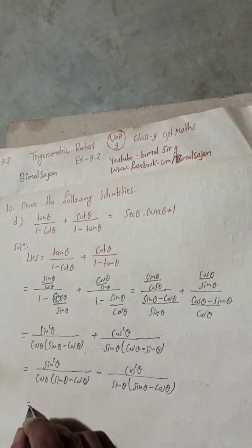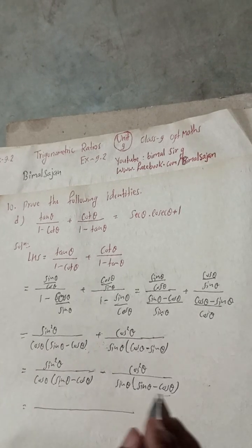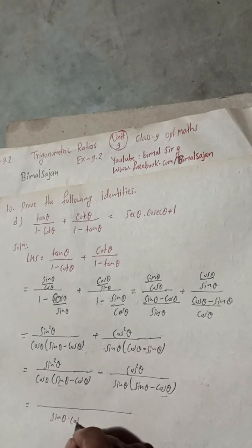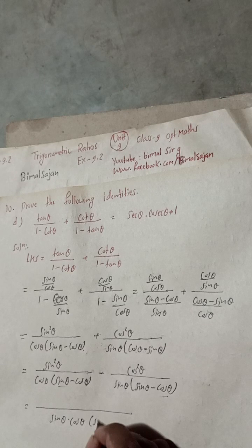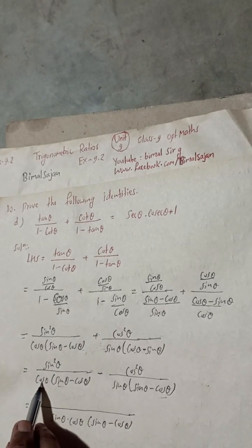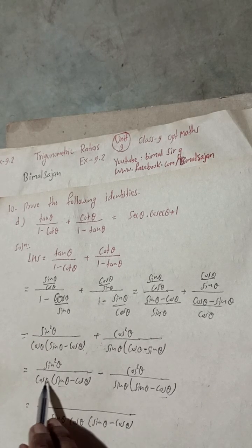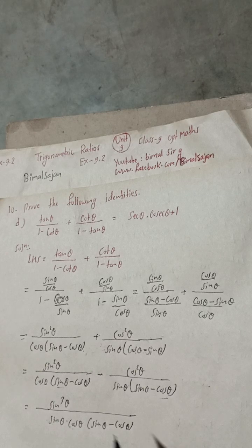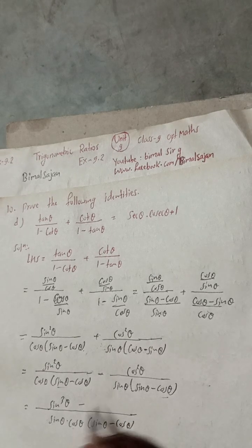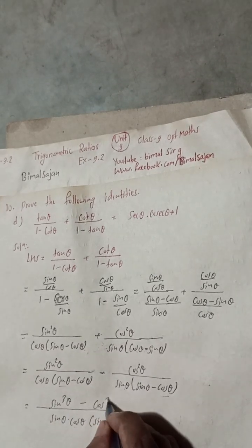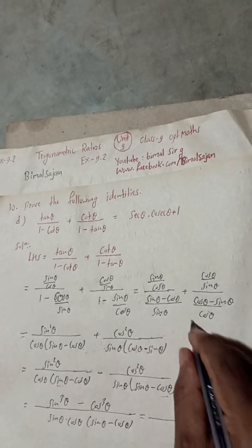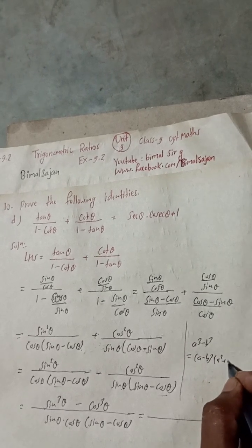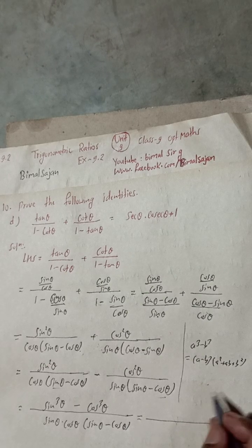Now you can see both parts have sin θ and cos θ. I will take sin θ · cos θ as common. Both factors are the same (sin θ minus cos θ) so I take it once. Multiplying gives sin³θ here and cos³θ there. The formula used is: a³ − b³ = (a − b)(a² + ab + b²).